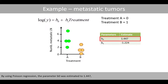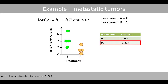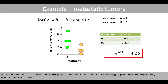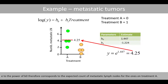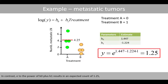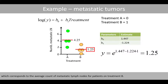By using Poisson regression, the parameter B0 was estimated to 1.447 and B1 was estimated to negative 1.224. Remember that e to the power B0 corresponds to the expected count of metastatic lymph nodes for the ones on treatment A. In contrast, e to the power B0 plus B1 results in an expected count of 1.25, which corresponds to the average count of metastatic lymph nodes for the patients on treatment B.